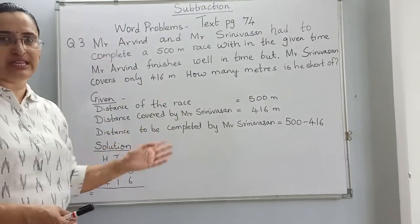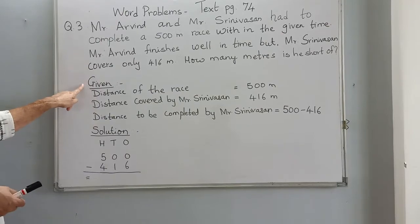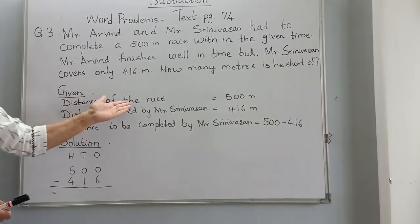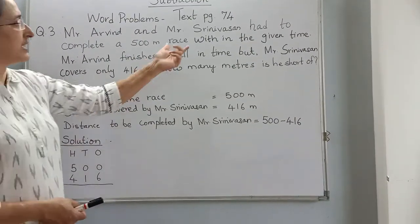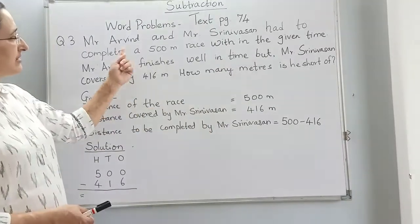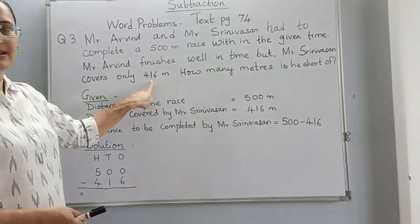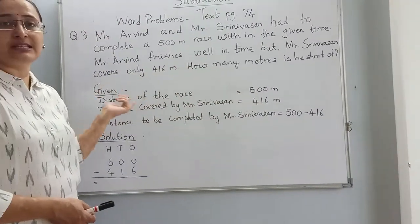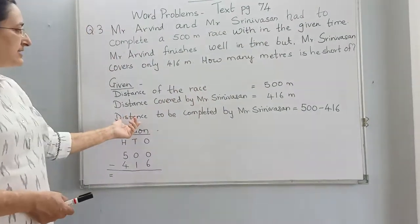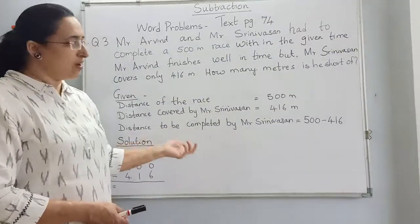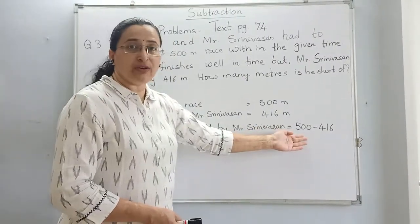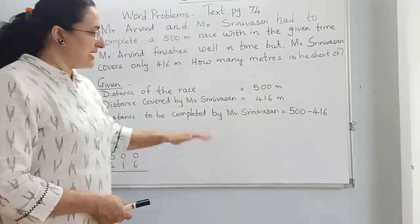We have to do subtraction. Let us start solving. Given means the information which is already there in the sum. Distance of the race is 500 meters. Distance covered by Mr. Srinivasan is 416 meters. We are not writing the distance covered by Mr. Arvind because Arvind has finished the race within the given time. So we will do 500 minus 416.